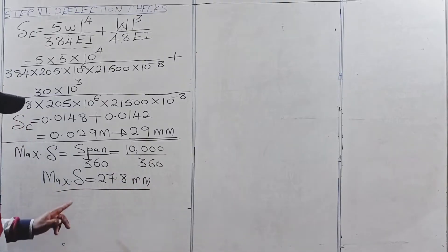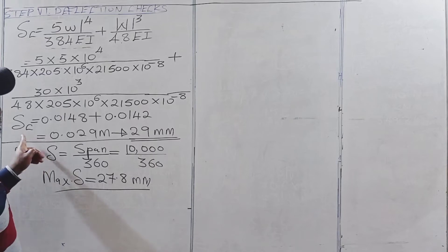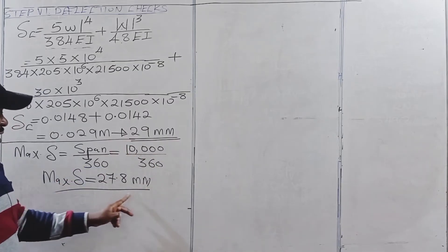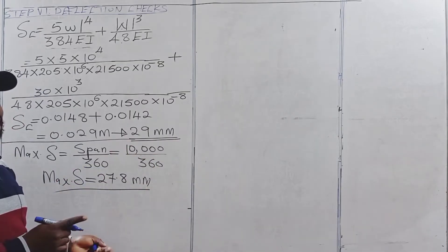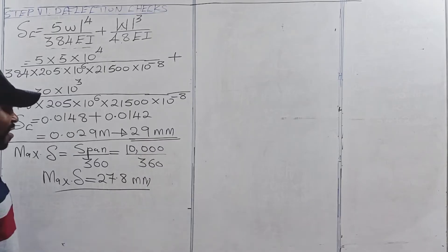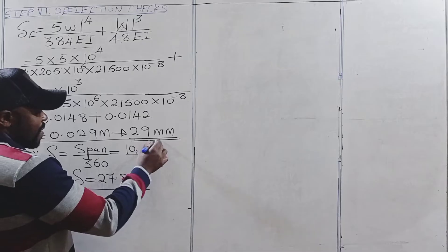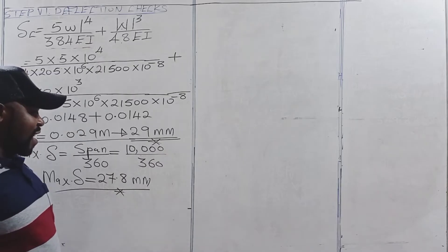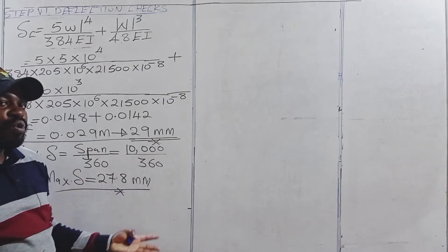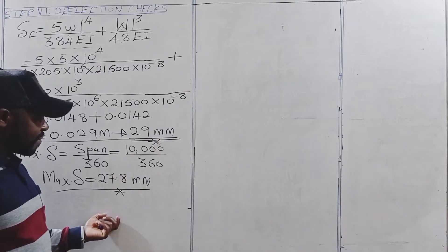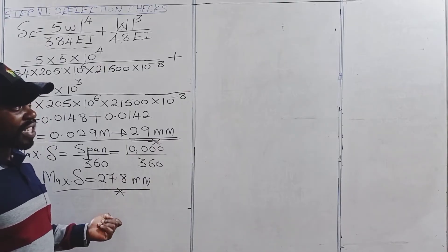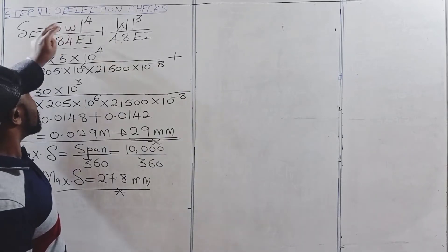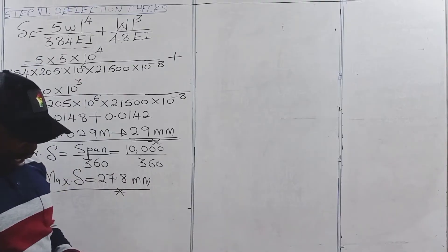The total deflection at the center of 29 mm has exceeded the maximum deflection of 27.8 mm, which means a larger section could be chosen. However, the excess is only 2.8 millimeters, which is not too large to result in any damage to this section. So in terms of deflection, we are done with the sixth step — the deflection check.